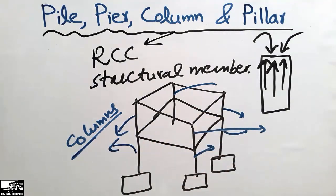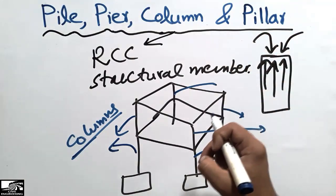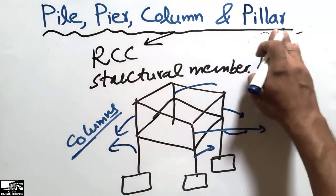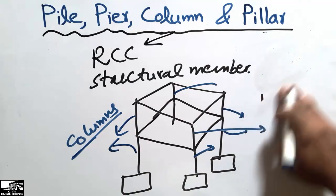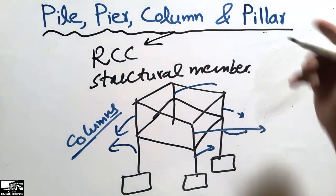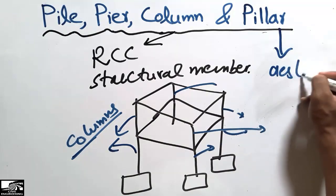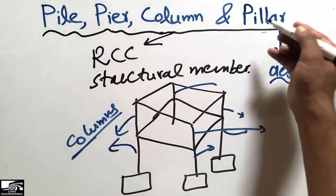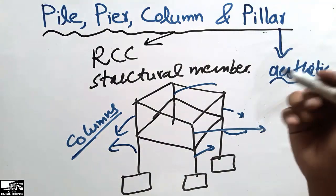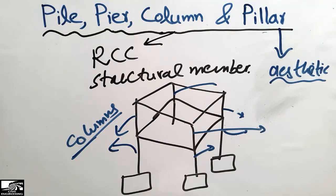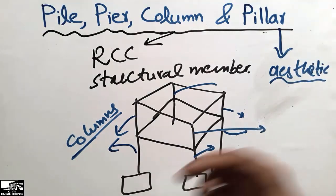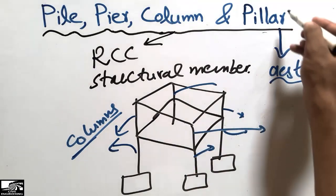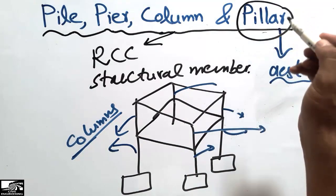The pillar is a little bit different from the other vertical members. A pillar is mostly used for aesthetic purposes — for beautification. In mosques we usually see pillars and domes, and they are used only for aesthetic purposes, to beautify the structure and make it look beautiful. This vertical member used for decorative purposes is known as the pillar.